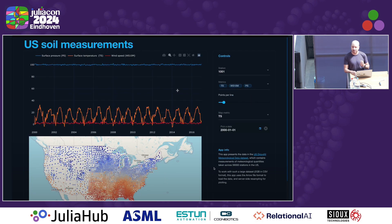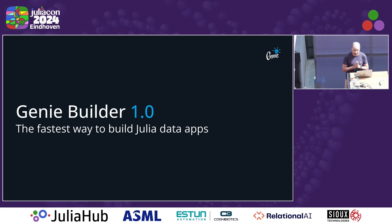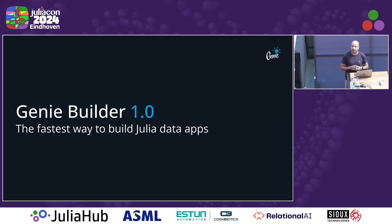For our first big news from this past year, we have Genie Builder 1.0, which is the best and fastest way to create data apps in Julia without having to write any UI code at all.